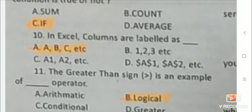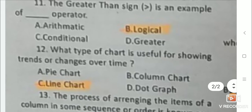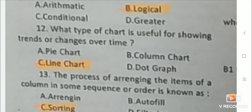Next: The greater than sign is an example of what operator? Answer is logical operator. Next: What type of chart is useful for showing trends or changes over time? Answer is line chart. Next: The process of arranging the items of a column in some sequence or order is known as sorting.